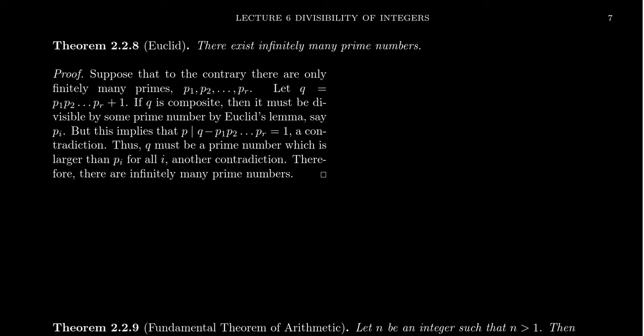This is where Euclid's Lemma comes into play. Take the number pi—this is a prime. It divides q by assumption.